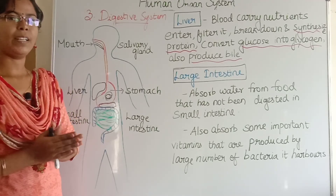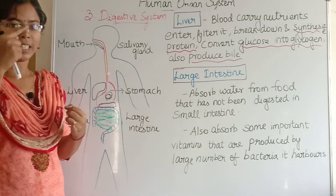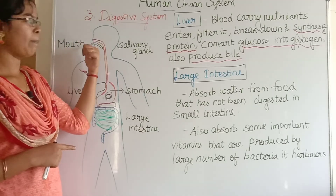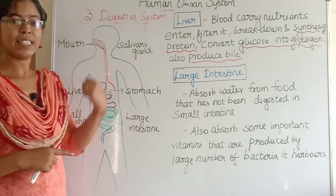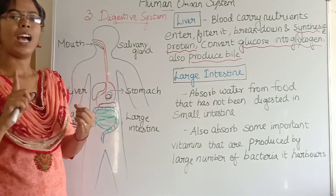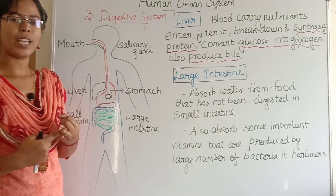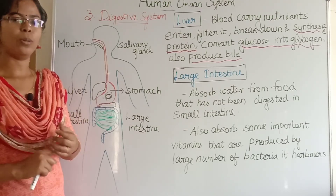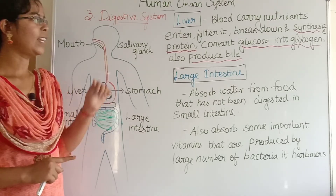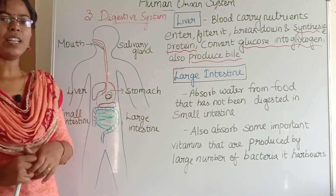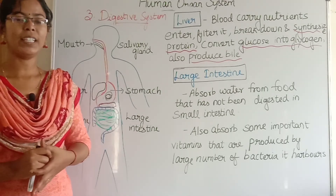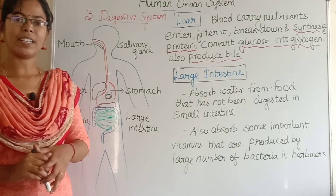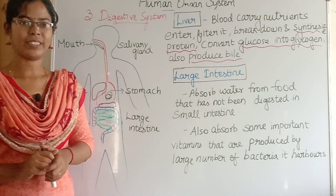So this is the 9-meter-long alimentary canal that starts from the mouth and ends at the anus, along with the associated glands. I hope you understand these concepts well. If you have any doubt, please comment. In the next video we will see another interesting topic. Thank you for watching.